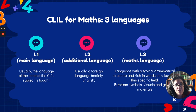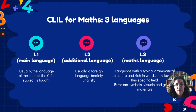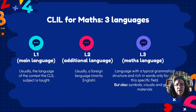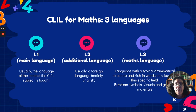In the case of mathematics, we also have a third language: the maths language. Literature says that maths is a language with a typical grammatical structure, rich in words that are only or mainly used in this specific field. The mathematical language also includes additional graphs, symbols, visuals, and graphic materials that complete the language. So when using CLIL formats, three languages should be borne in mind.